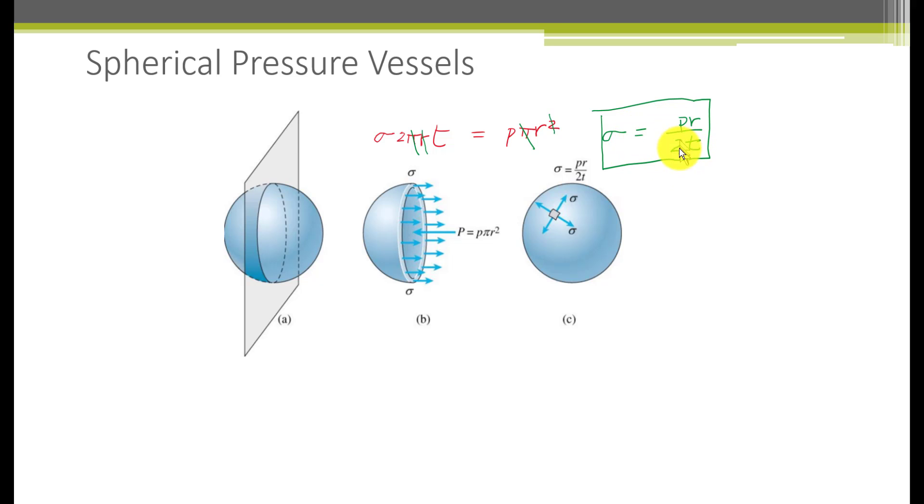Note the interesting fact that the membrane stress is exactly the same as the axial stress for a given diameter and pressure. That means that for a given diameter and pressure you would use half as much steel wall thickness as you would for a cylindrical vessel.